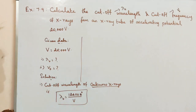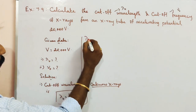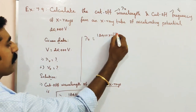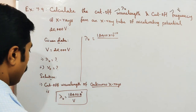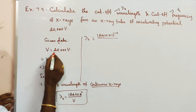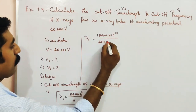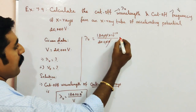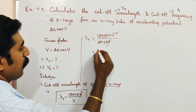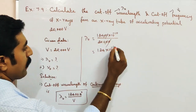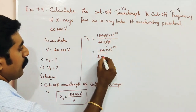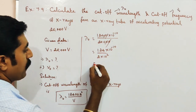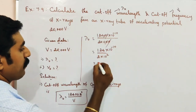So λ₀ = 12,400 Ångströms (where 1 Ångström = 10⁻¹⁰ m) divided by V, and V = 20,000. Cancelling the zeros: 20,000 = 2 × 10⁴, so we get 12,400 divided by 2 × 10⁴. That gives 6,200 divided by 10⁴.